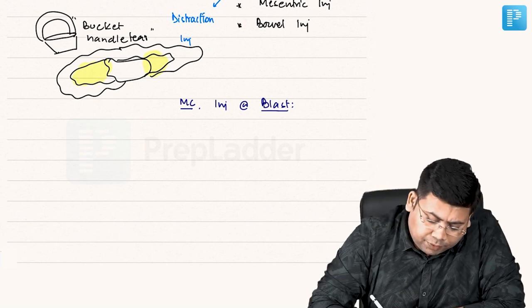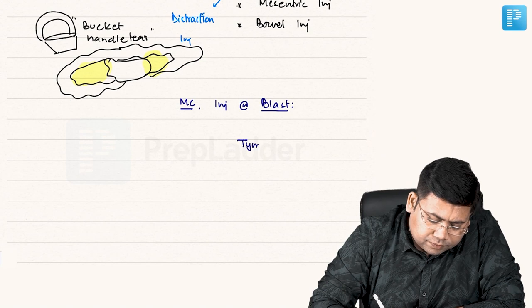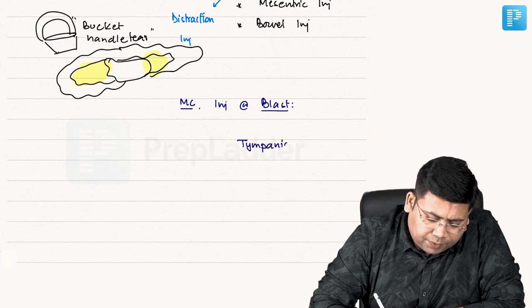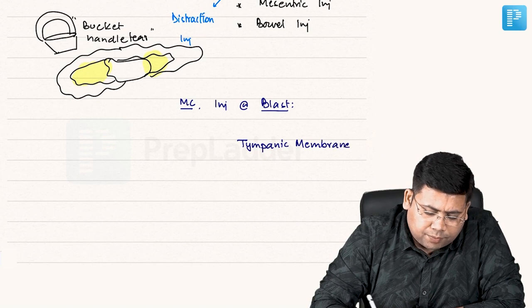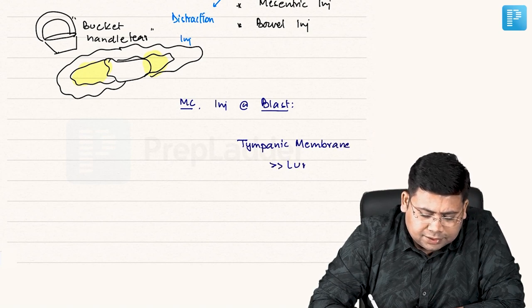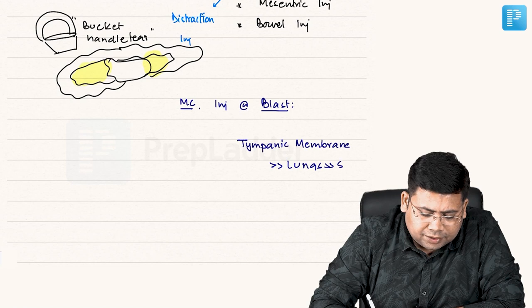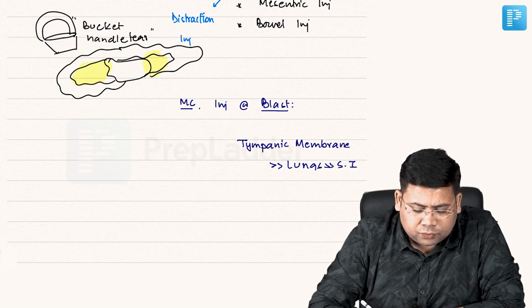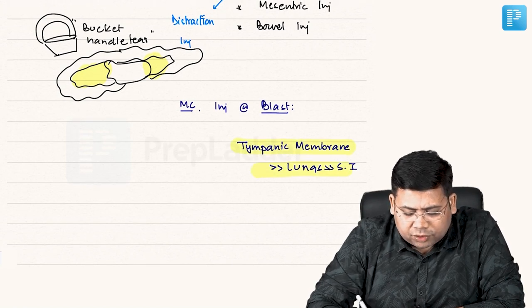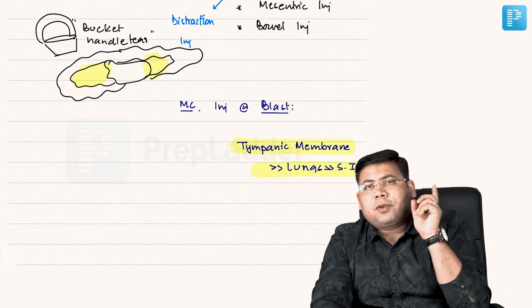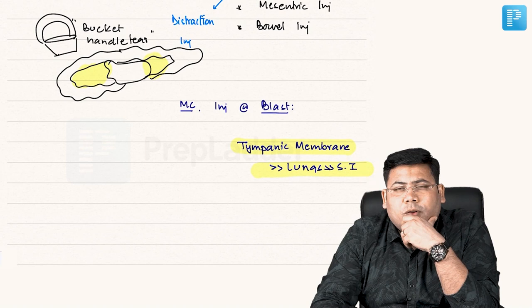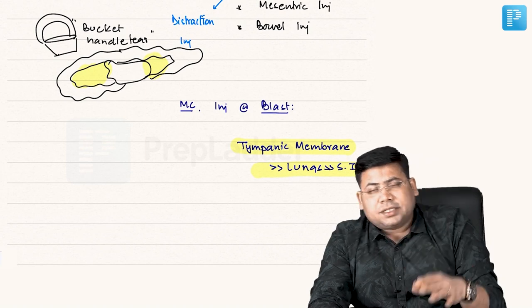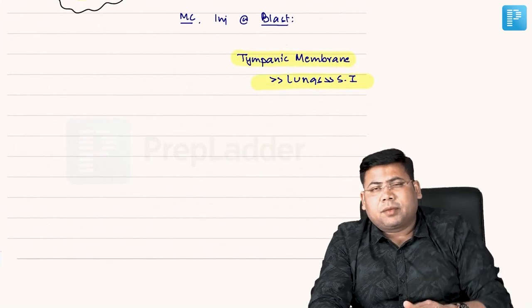Therefore remember, it is the tympanic membrane which is the most common site. Tympanic membrane greater than lungs greater than small intestine. A humble request - be it above water or underwater - don't remember your undergraduate days when you used to say small intestine is the most common organ injured. In underwater blast also, it is tympanic membrane.